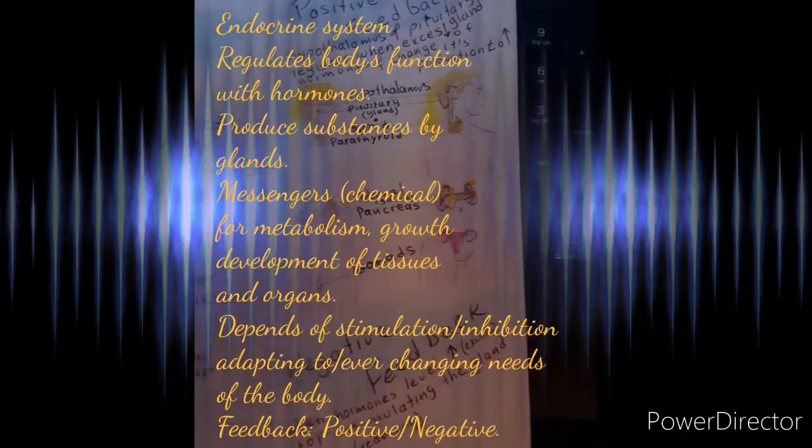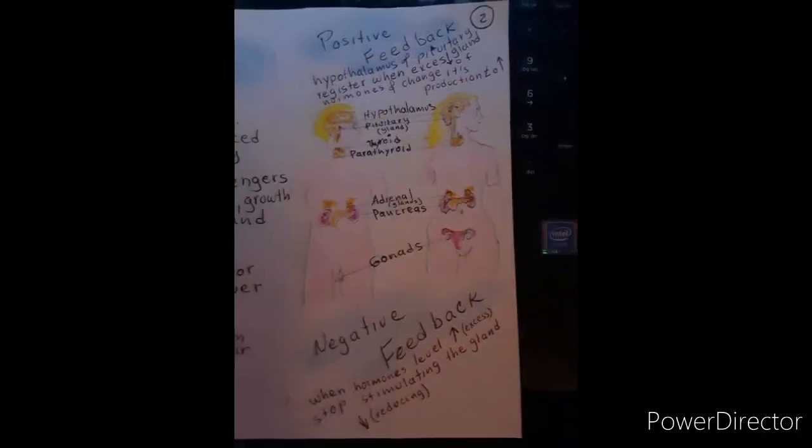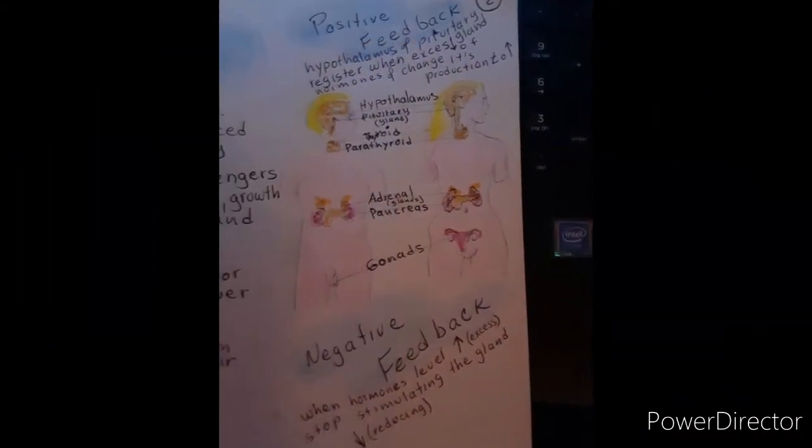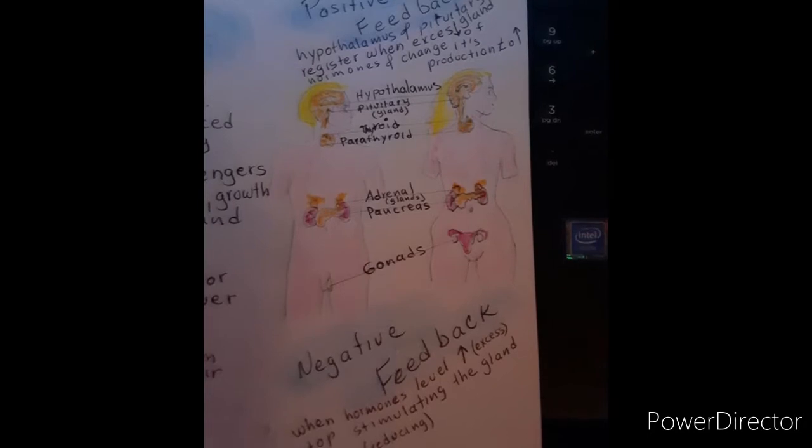Gonadotropic releasing hormone, corticotropin releasing hormone, oxytocin, vasopressin. Under the thyroid, the triiodothyronine and the thyroxine.